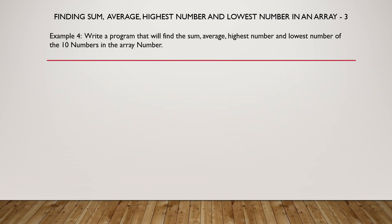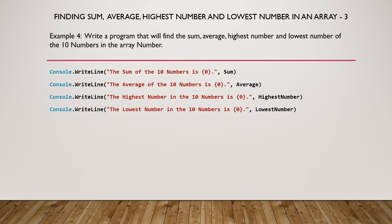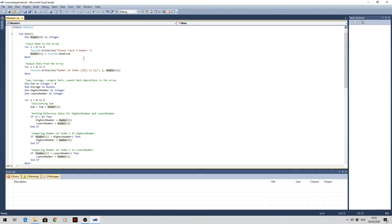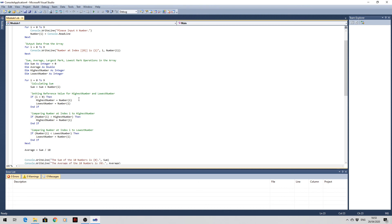Once this is completed, we output the values as follows: the sum of 10 numbers using variable Sum, the average of 10 numbers using variable Average, the highest number using variable Highest Number, and the lowest number using variable Lowest Number. Now let us see an example of how to use this program. Here we are in Visual Basic where we are going to run this program. The program has been written in the module and it is the same program we have seen earlier, with comments explaining what is happening.